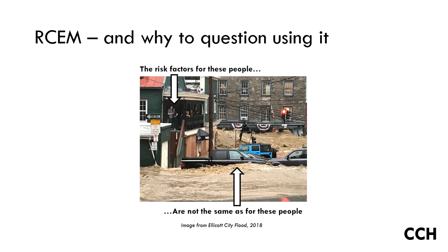When undertaking detailed consequence modeling, this image summarizes the key issue with the RCEM guide. It treats populations who are effectively sheltering, such as those shown on a balcony, in the same way as those that are exposed, such as those that are stuck in vehicles. It also makes assumptions about warning times, which might not be an accurate reflection of population behavior downstream of tailings dams.